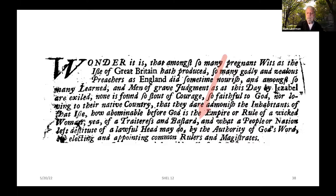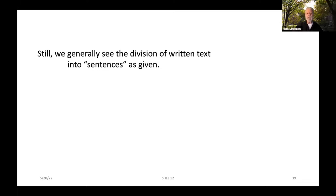We tend to see the division of written text into sentences as given. Everybody measures sentences by ignoring the periods in initials and decimal points, and paying attention only to those that end sentences — every time we see a period, exclamation point, or question mark, we say that there's a sentence more or less. But in spontaneous speech, the division into sentences depends on transcribers' choices, which can and do vary a lot, and transcribers are not really given the kind of respect in this matter that authors and editors have.